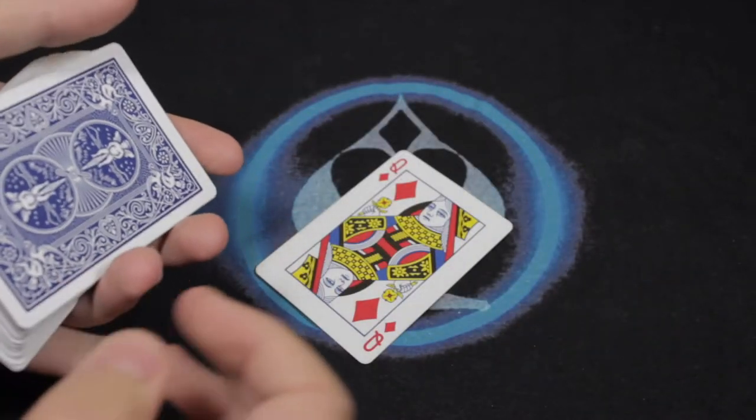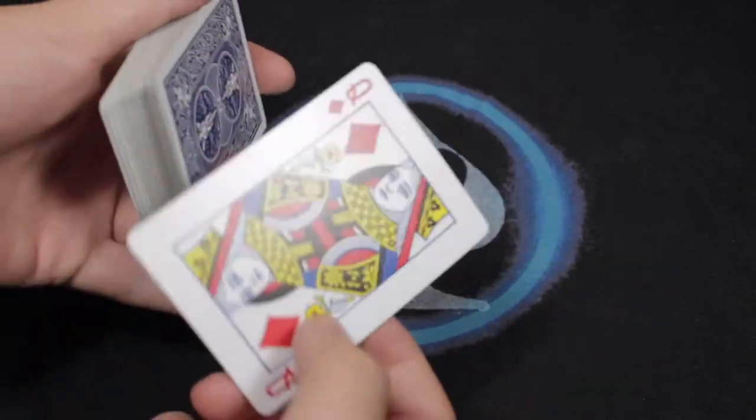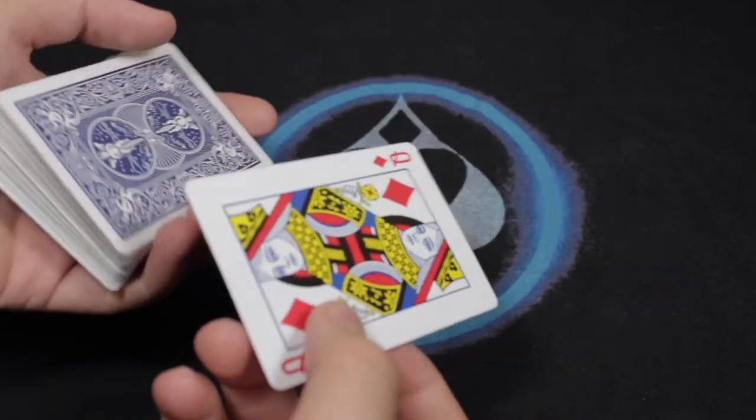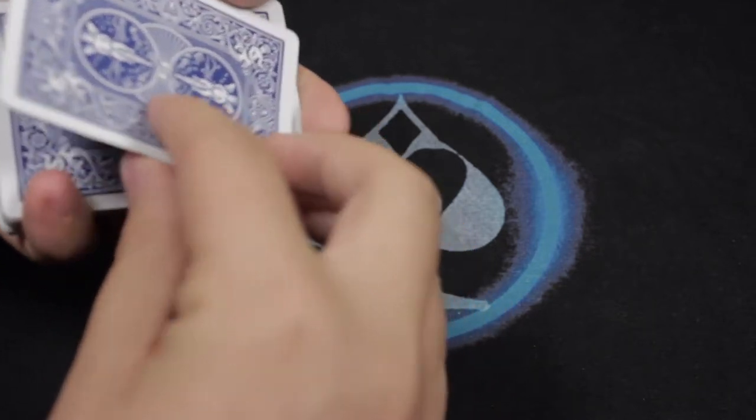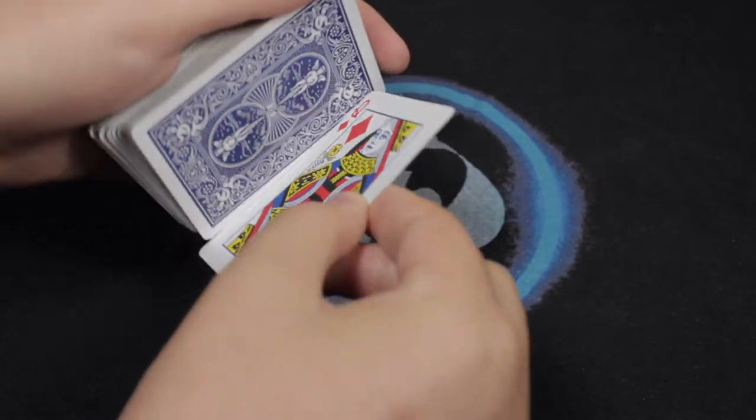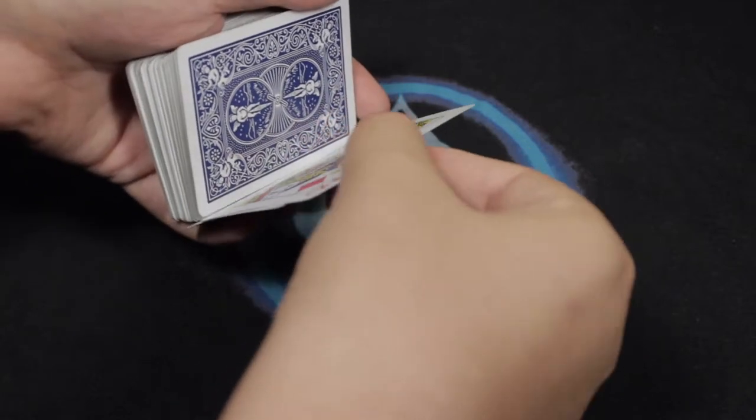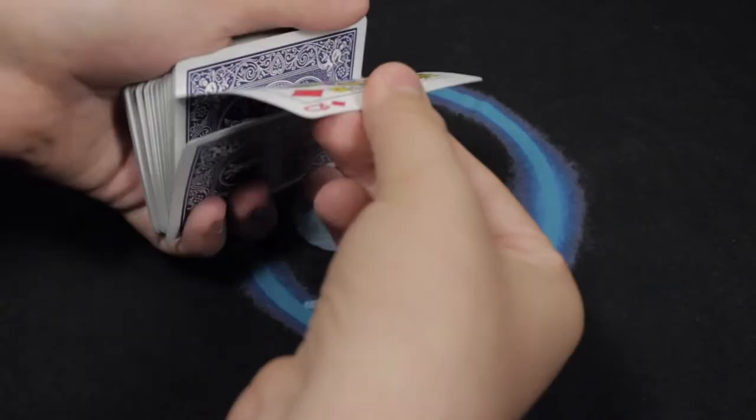All right, so now basically after you control the card to the top or second to the top, here's a really rough version of how the KM move works. Basically, you're just grabbing it and then you're painting it off just like that. Then you have one card.